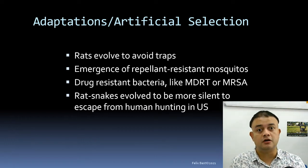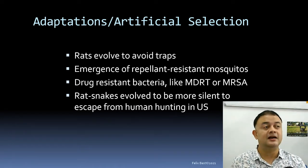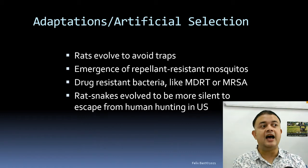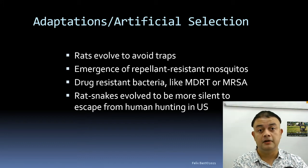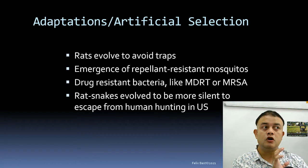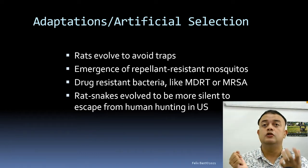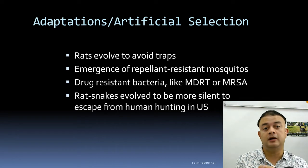Elephant tusks are also getting shorter and shorter in response to artificial selection — hunters target elephants for their ivory. Earlier, a male elephant with a longer tusk was advantageous because it helped attract females through sexual selection. But these days, a longer tusk is a disadvantage because it makes males more prone to hunting. Those with the inability to grow longer tusks are being selected due to human intervention — that is artificial selection.